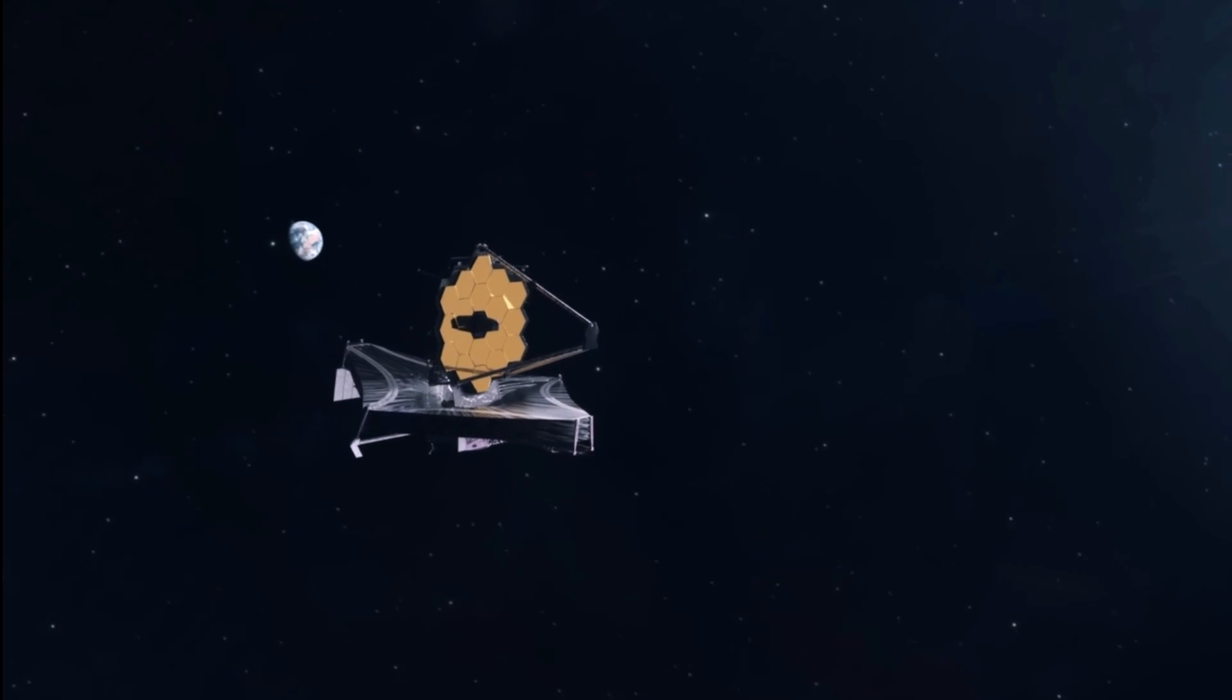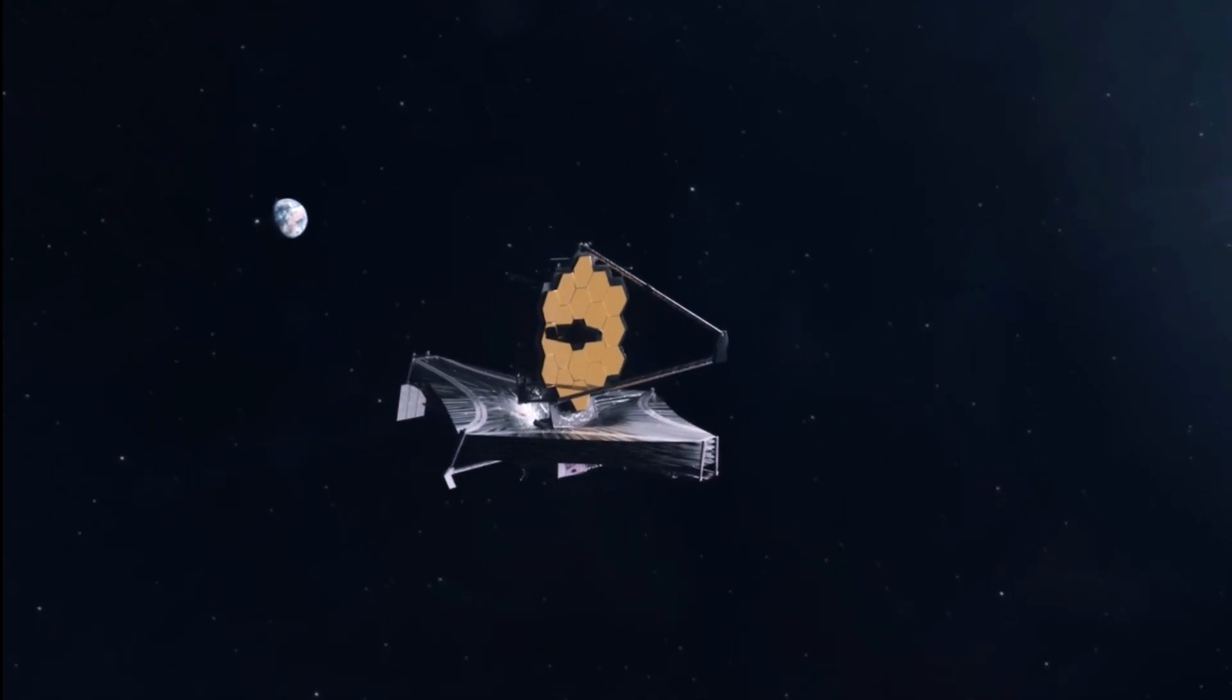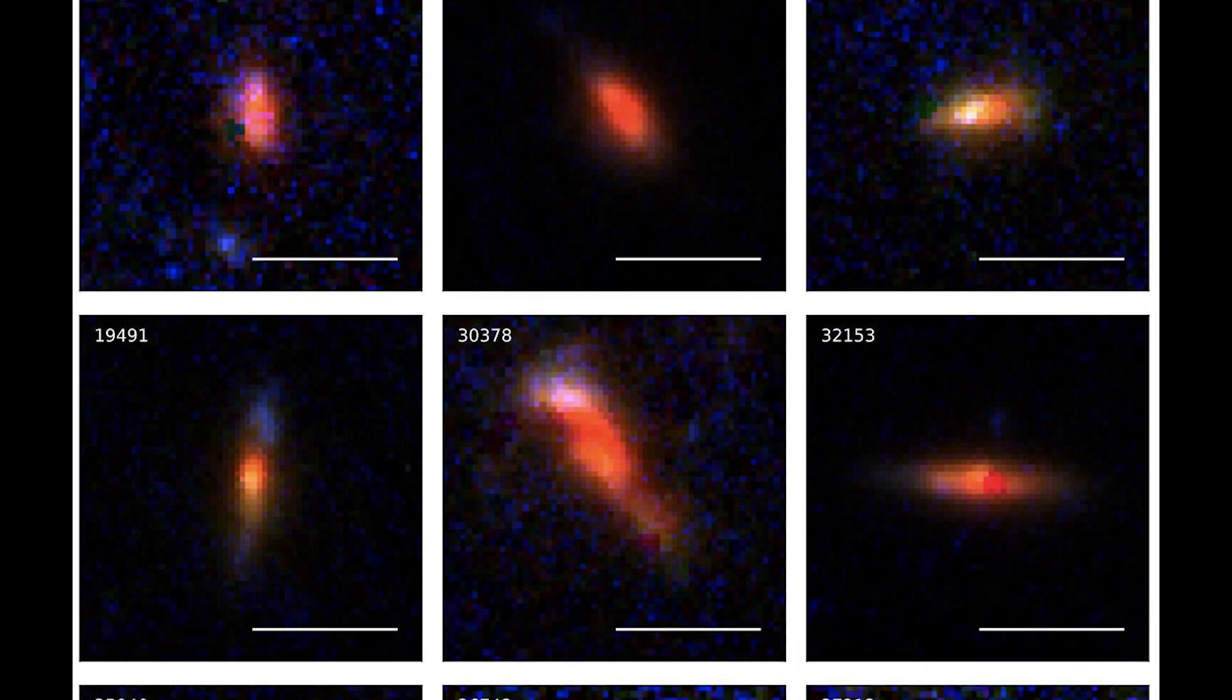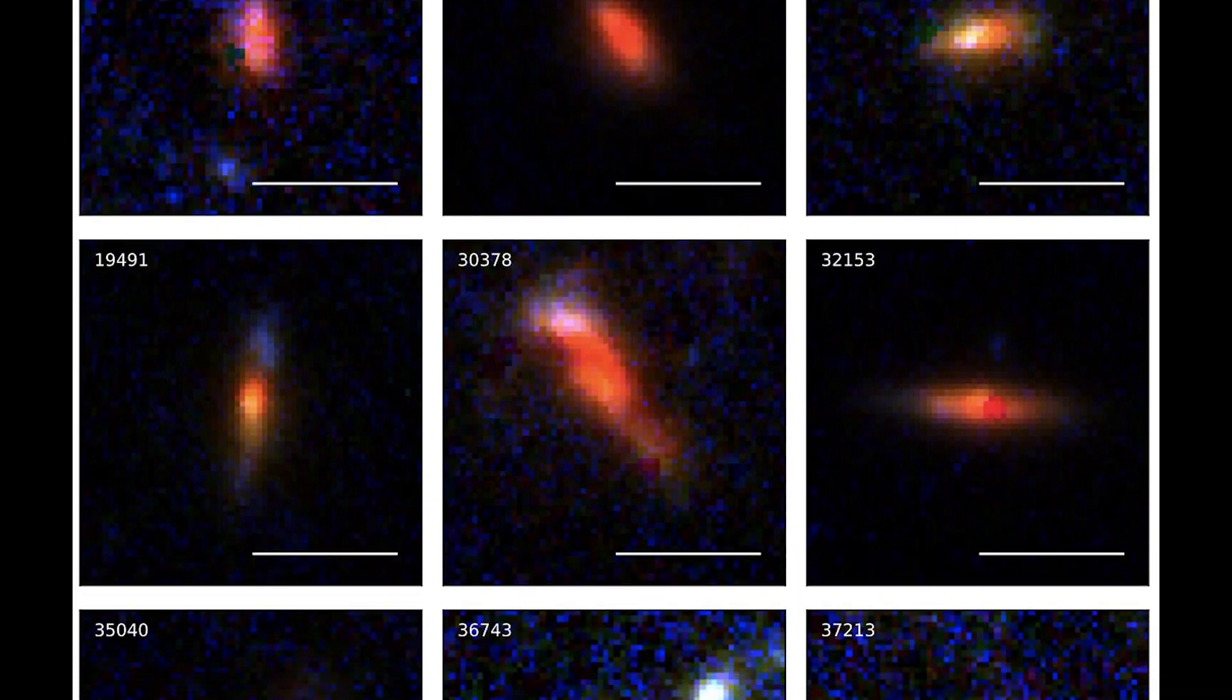Researchers have recently analyzed the gravitational lensing of the oldest visible light using NASA's James Webb Space Telescope. The data contains the oldest dark matter that surrounds galaxies, dating back to 12 billion years.